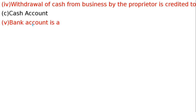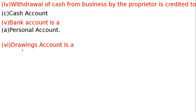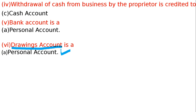Fifth question: Bank account is which type of account? It is actually an artificial personal account. From the 4 options, option A is correct — it is a personal account. Drawings account: owner ne paisa nikaal liya, business se apna private kharche ke liye — drawings account and capital account, both are personal accounts.